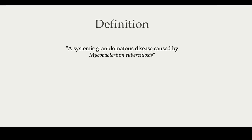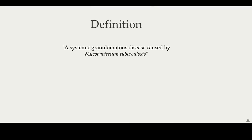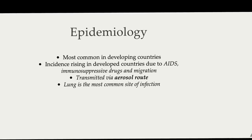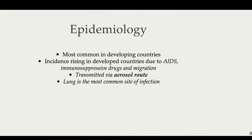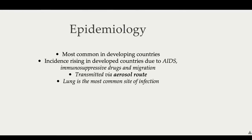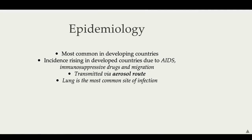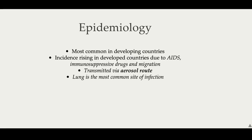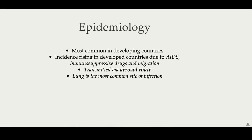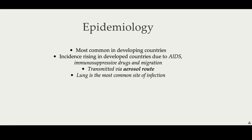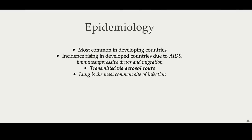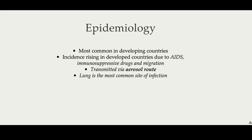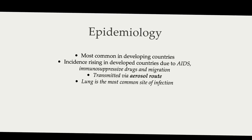Let's kick off with a good definition. Tuberculosis is a systemic granulomatous disease caused by Mycobacterium tuberculosis. The most important epidemiology to know is that this is a disease that is most common in developing countries. However, due to increased incidence of AIDS and immunosuppressive drugs and migration, the incidence of TB is rising in developed countries. Transmission of TB occurs via the aerosol route and the lung is the most common site of infection by far.